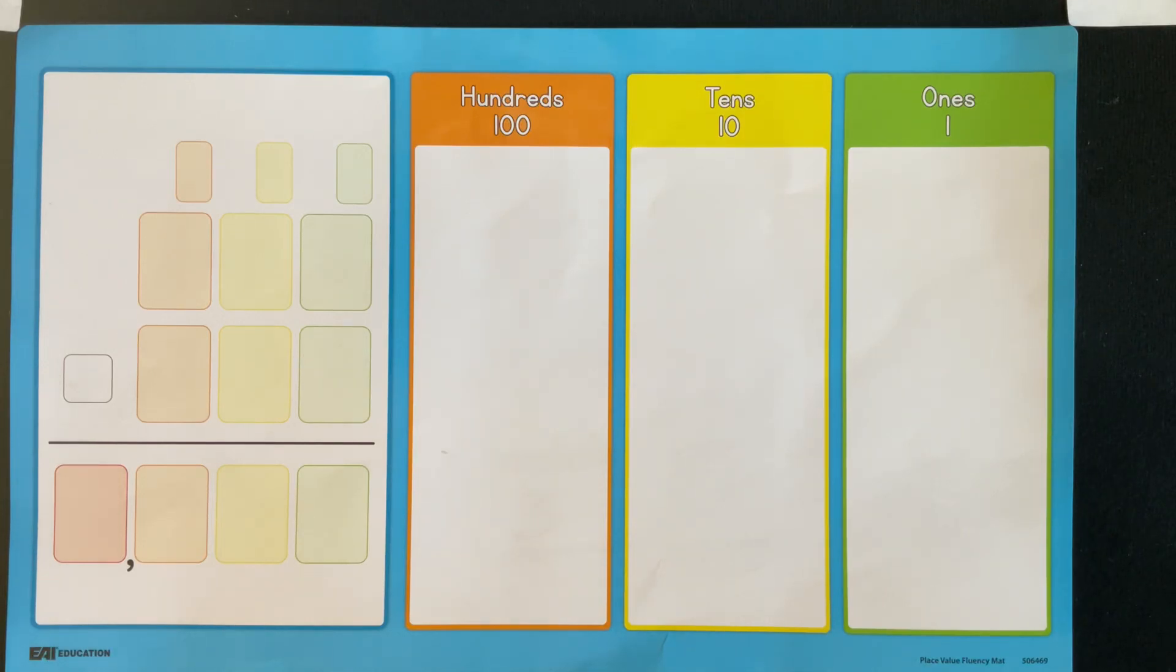This session is going to focus on grade 2 standards that align to operations and ways that you can use the place value disk. Within your standards it says that kids have to fluently add and subtract within a hundred, so if that has to become fluency we would not use place value disk.